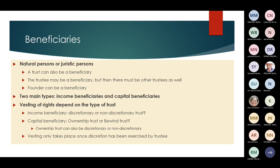Beneficiaries can be natural persons or juristic persons, and the trust itself can also be a beneficiary. A trustee may be a beneficiary, but then there must be other trustees as well. The founder can also be a beneficiary. There are two types of beneficiaries: income beneficiaries and capital beneficiaries. The vesting of rights depends on the type of trust: if the trustee has a discretion, the vesting is postponed until they have exercised their discretion. In a bevent trust, the beneficiary already has ownership.